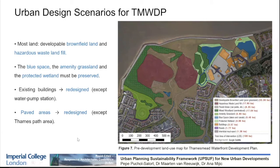The pre-development stage, as we can see in this map, shows that most of the land is developed brownfield land with waste landfills, which means we cannot build in this space. We also have some blue space, amenity grassland, and unprotected wasteland that must be preserved and cannot be changed. On the other hand, most of the existing buildings will be redesigned, apart from a water pump station. Most of the paved areas will also be redesigned, apart from a Thames Path that runs through the three-kilometre river waterfront.